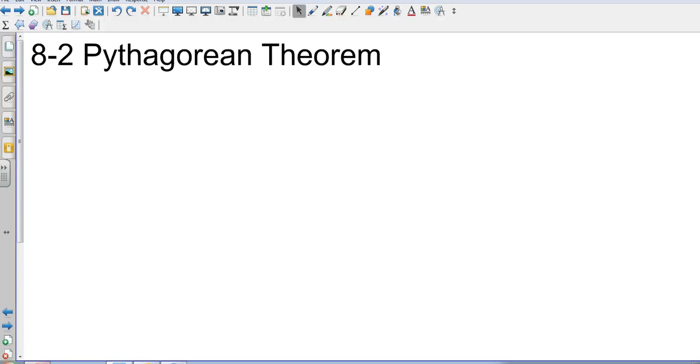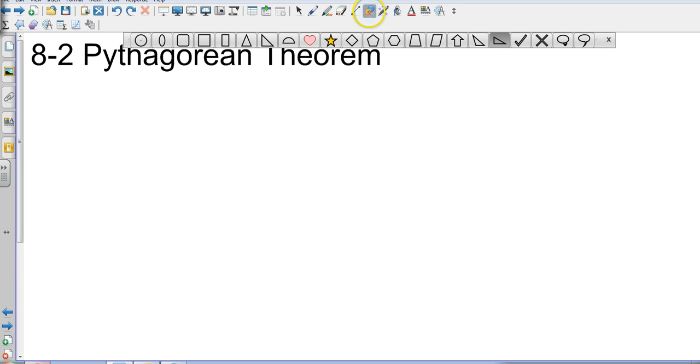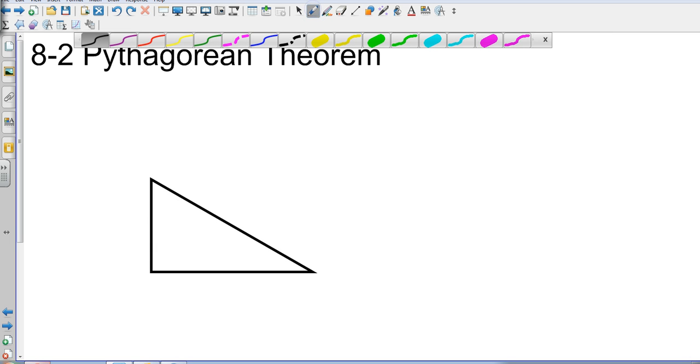All right chapter 8 section 2 for geometry. Good old Pythagorean theorem. So Pythagorean theorem has to do with right triangles and so we're gonna look at some right triangles.